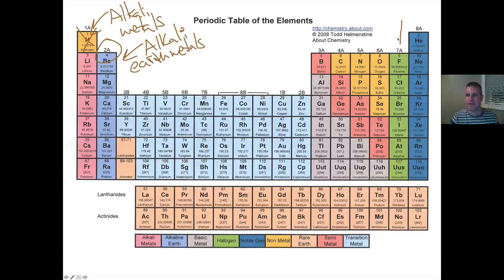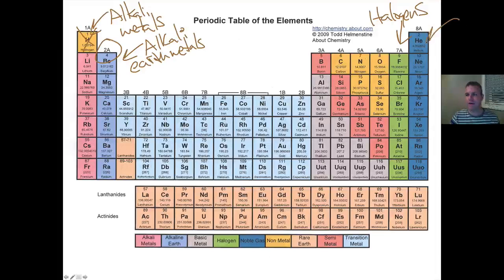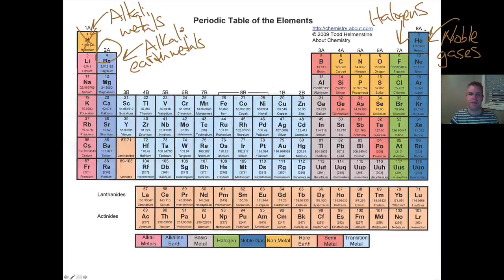Over here, we go to the other side of the periodic table and we have halogens. Halogens most commonly form compounds with the alkali metals. Then our other group that we're going to look at are the noble gases, and this does include helium.